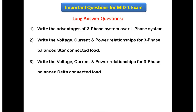The next question is: write the voltage, current, and power relationships for a three-phase balanced delta connected load. For the delta connected load, you have to draw the diagram and with the phasor diagram derive the relationship equations for line voltage and phase voltage, line current and phase current, and the power equations in terms of phase voltage, phase current, line voltage, and line current.